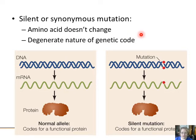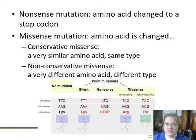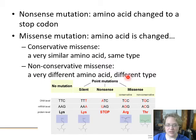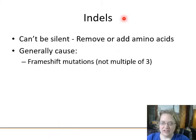To summarize: a silent (synonymous) mutation doesn't change the amino acid, due to the degenerate nature of the genetic code where multiple codons code for the same amino acid. A nonsense mutation changes that codon to a stop codon. A missense mutation can be conservative — a similar amino acid of the same type — or non-conservative, with a very different amino acid of a different type.